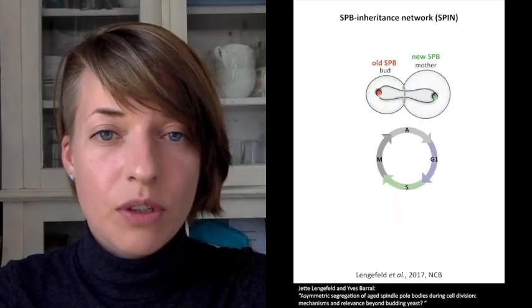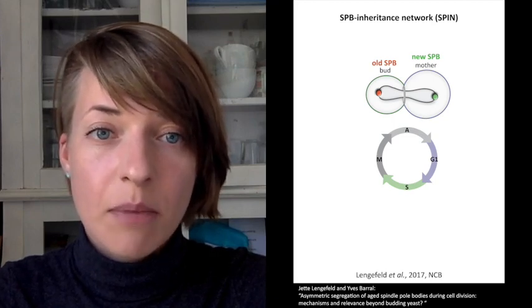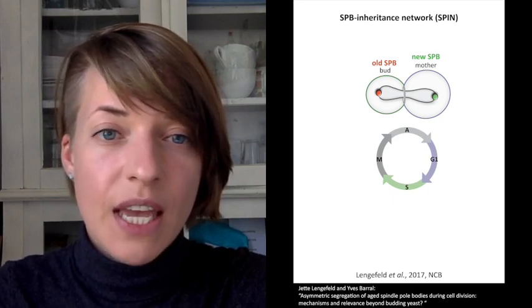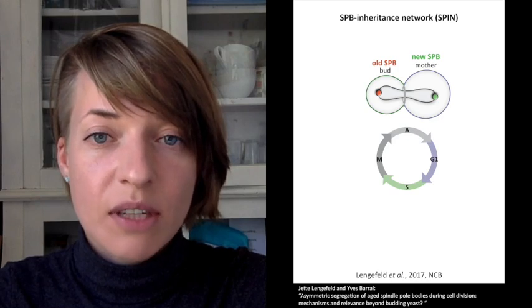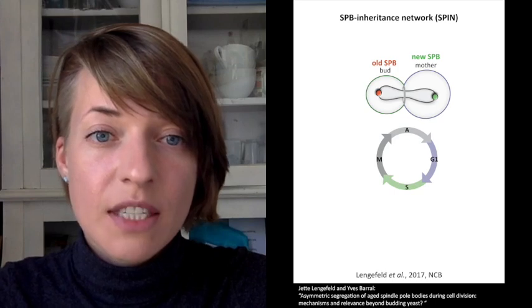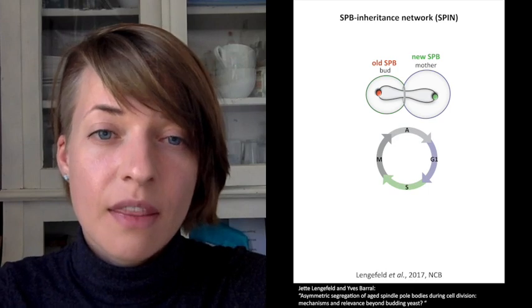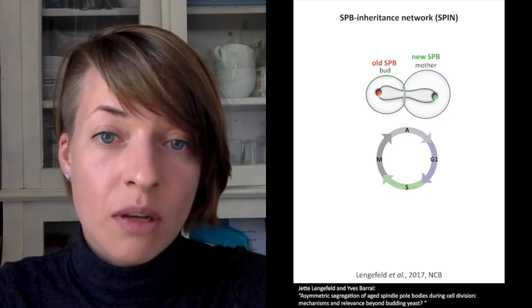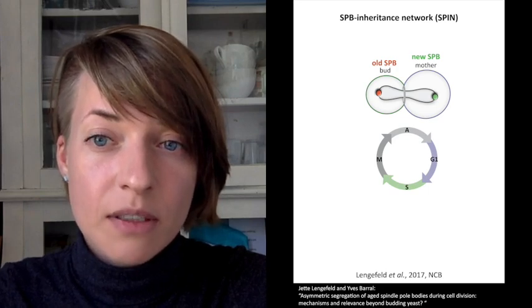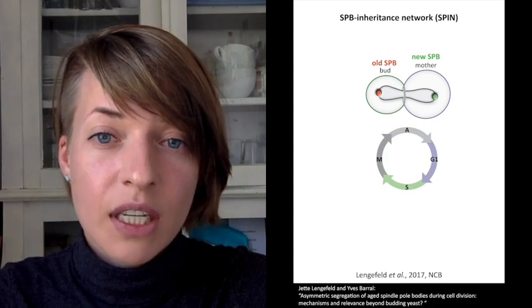First, we focus on the molecular mechanisms enabling budding yeast to recognize spindle bodies based on their age and guide their non-random mitotic segregation. Age-dependent segregation of spindle bodies requires that the cell distinguishes old from new spindle bodies. This is promoted by the spindle body inheritance network, short SPIN. The SPIN is a genetic network made of the acetyl transferase NuA4, TIP60 in animals, and the kinases SWE1 or WEE1 in other eukaryotes and KIN3, NECTK2 in mammals.